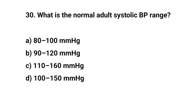Question No. 30. What is the normal adult systolic blood pressure range? Right answer is B. 90 to 120 mmHg.